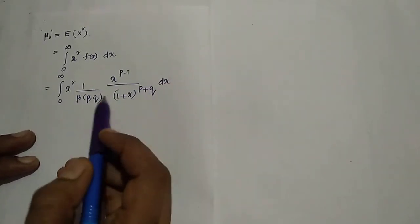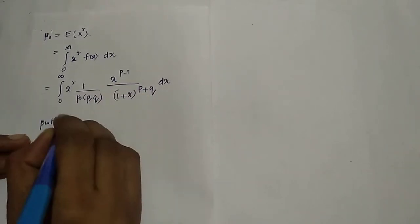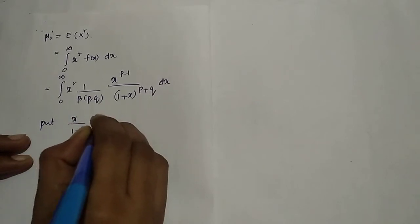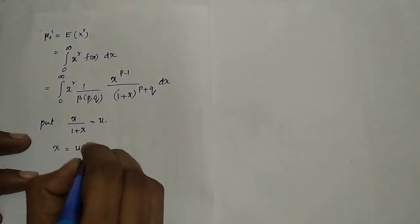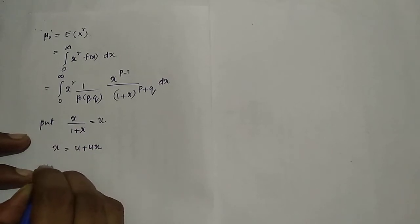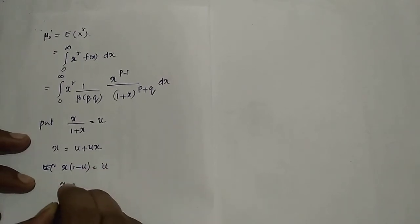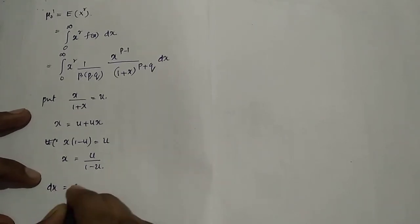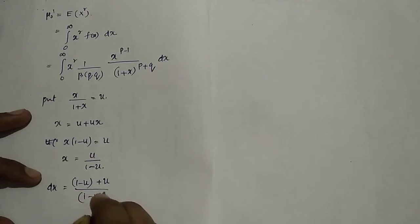We put x/(1+x) = u. Then x = u/(1-u). For dx, applying the quotient rule of differentiation: dx = [(1-u)·1 - u·(-1)] / (1-u)² du = 1/(1-u)² du.